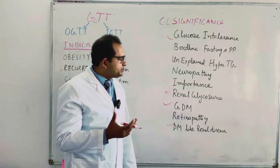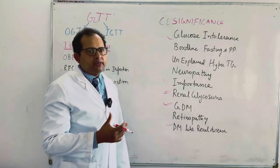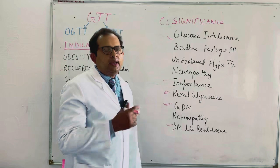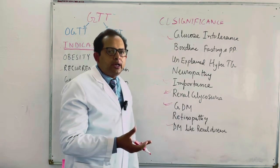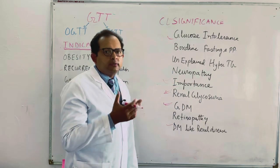And what is renal glycosuria? Renal glycosuria is when somebody is non-diabetic and non-hyperglycemic but he is having sugar in the urine.